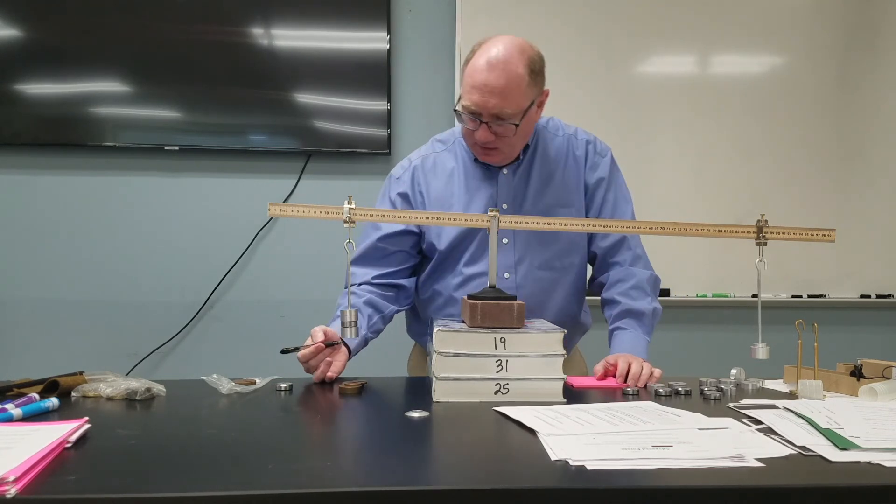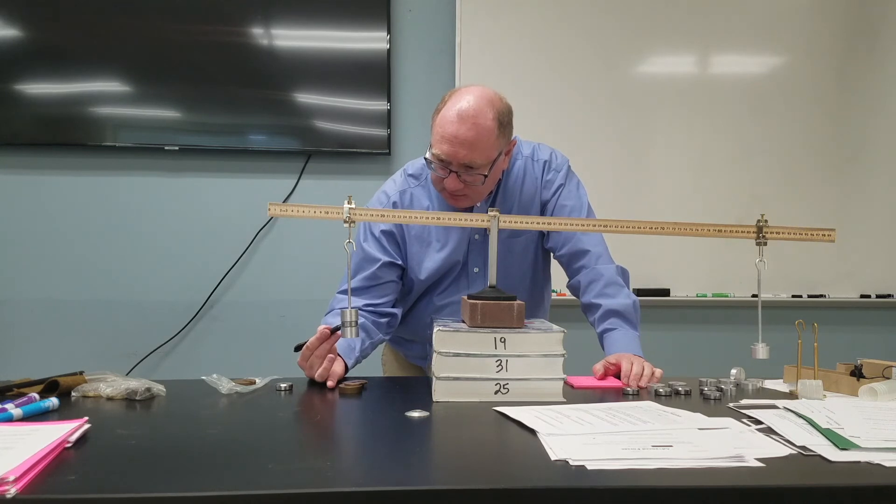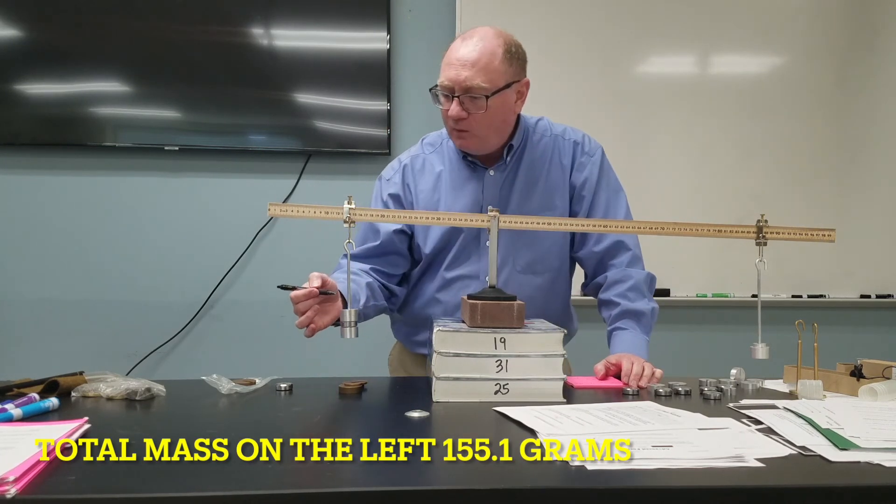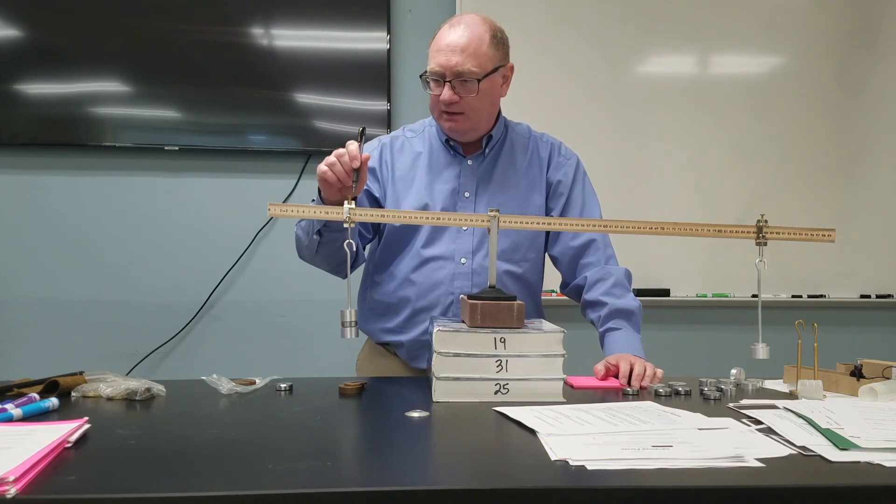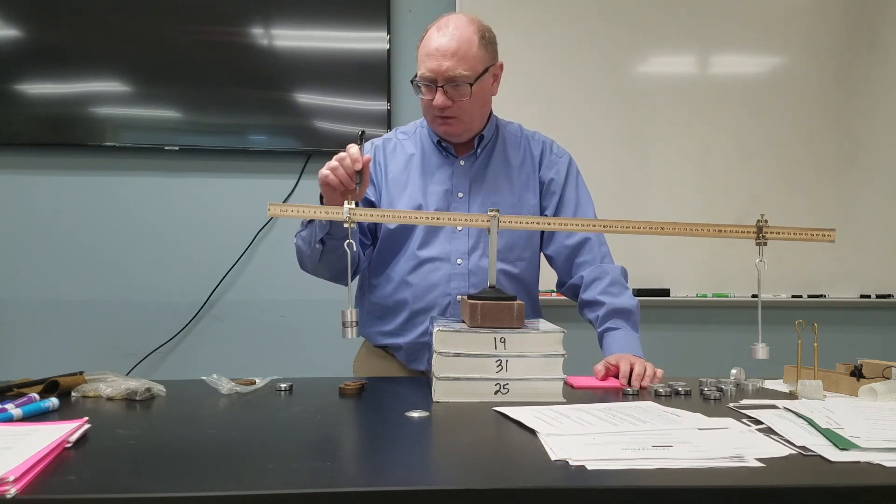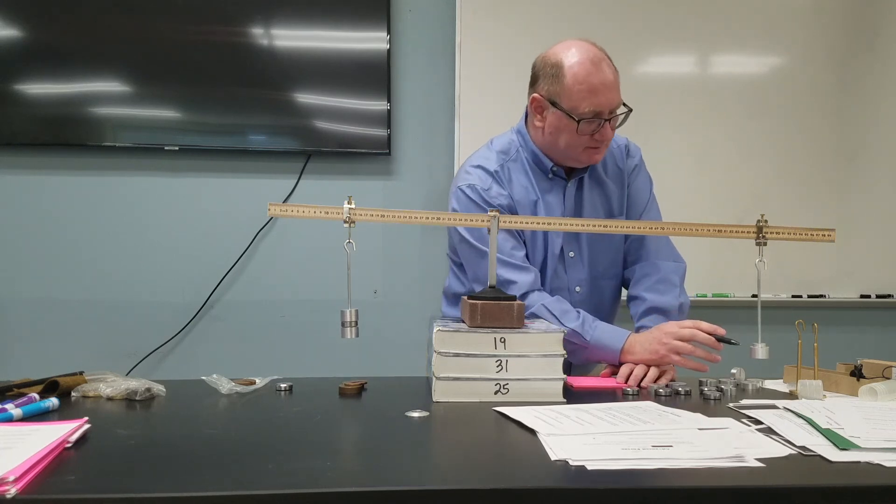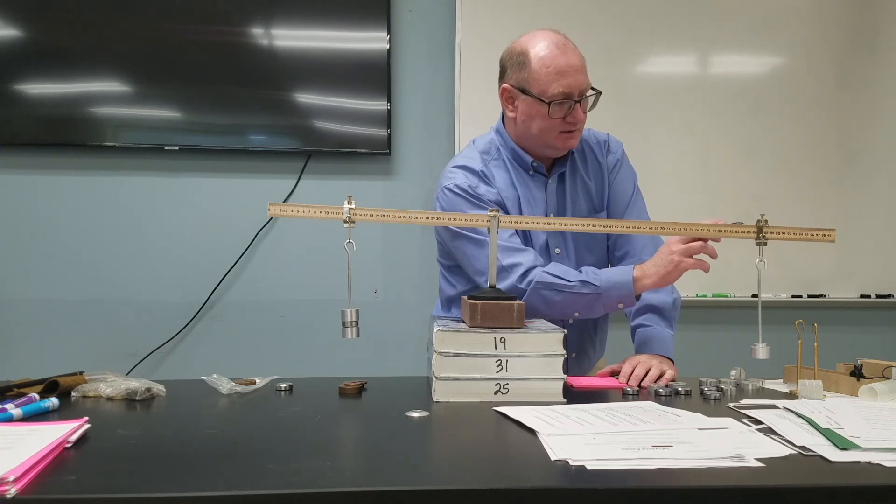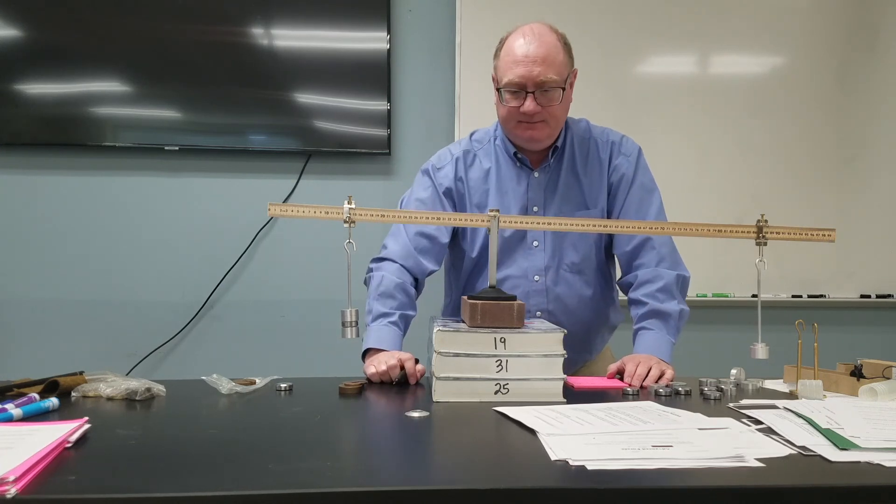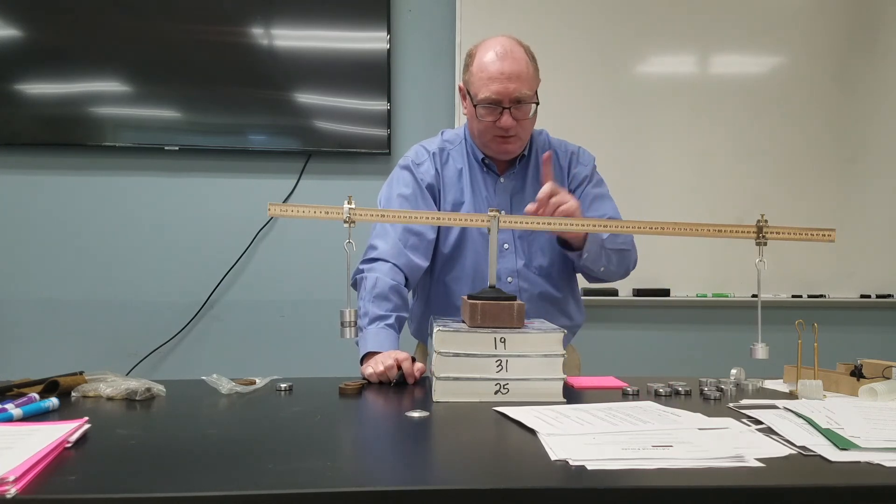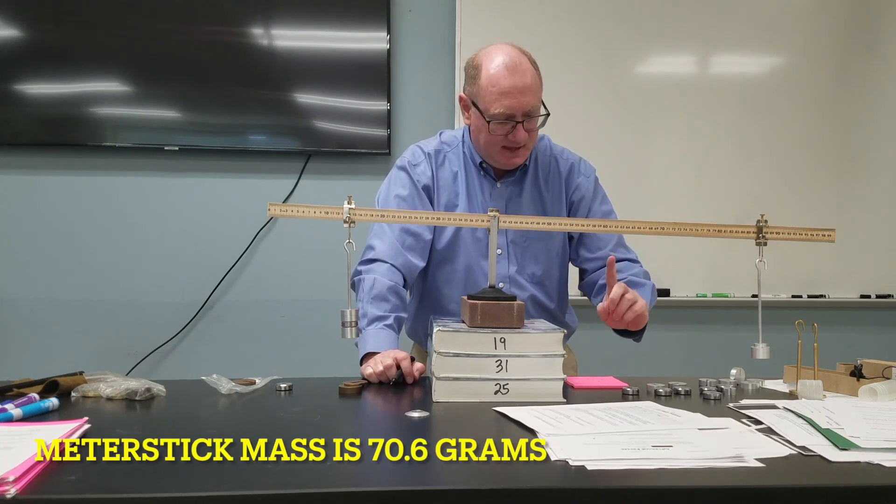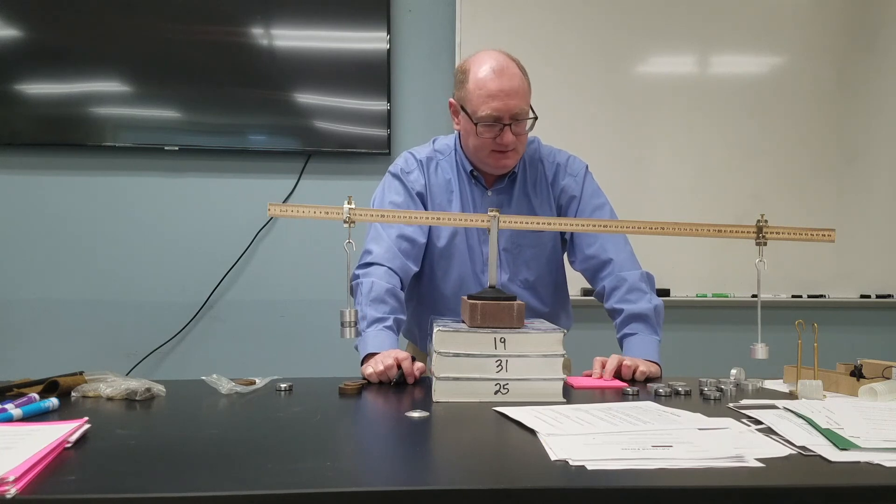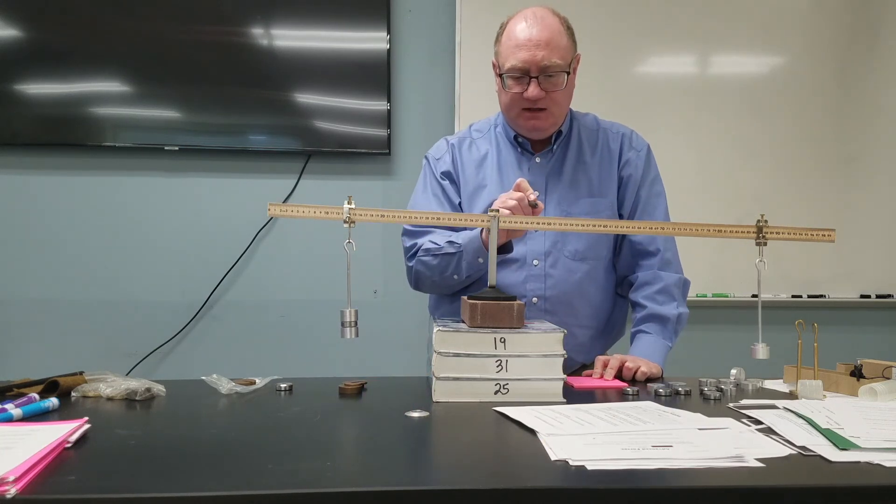This side we have 50, 100, 120, 140 plus the 15.1 grams for the holder. Over here we have 50 plus another 5, and then the 15.1 grams for that holder. Again, and most importantly, the meter stick itself has a mass of 70.6 grams, and the center of mass is at 50.2 centimeters.